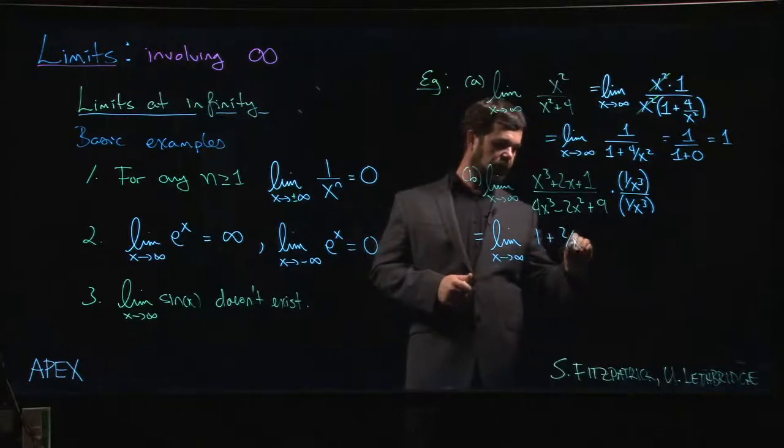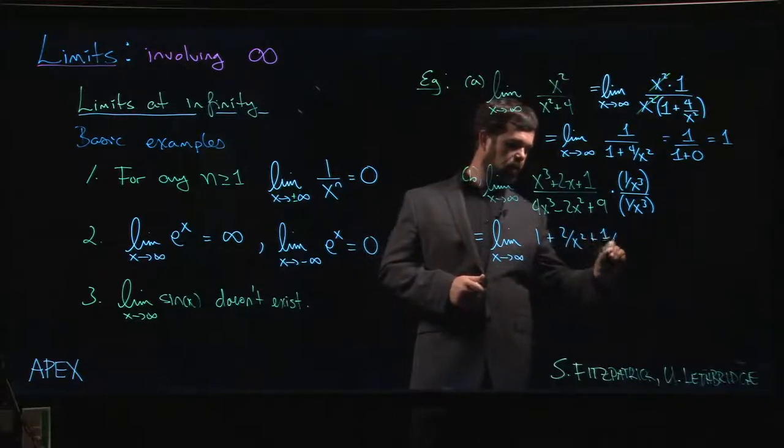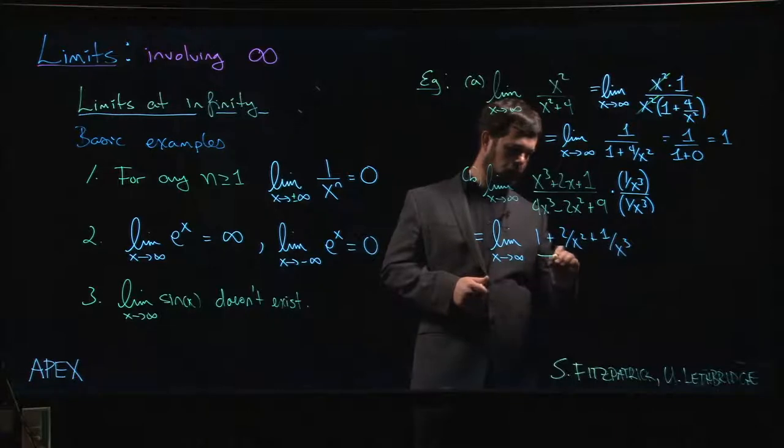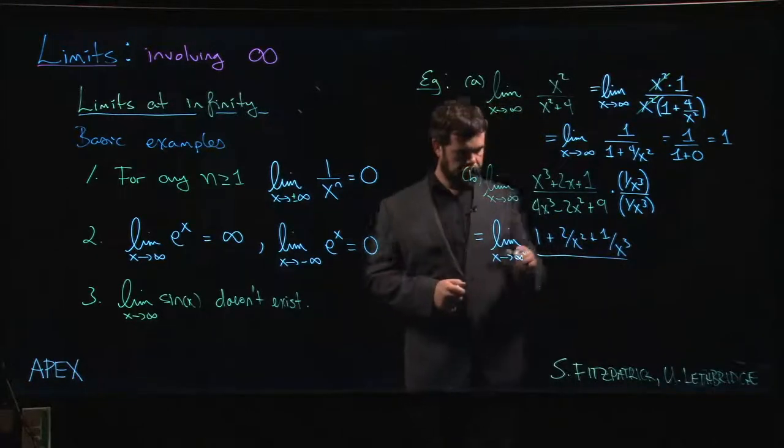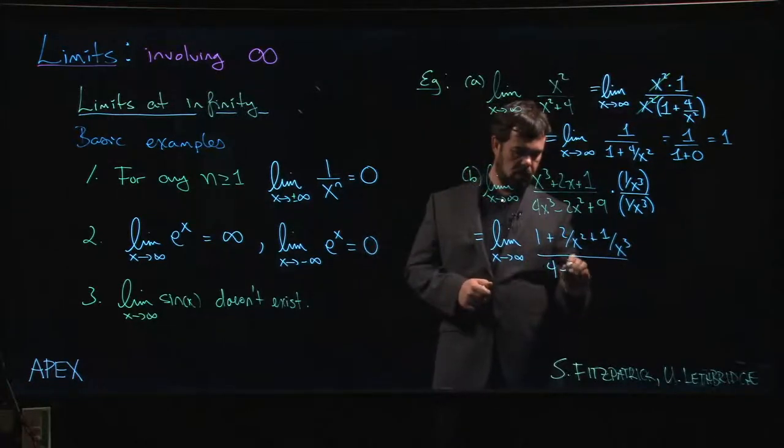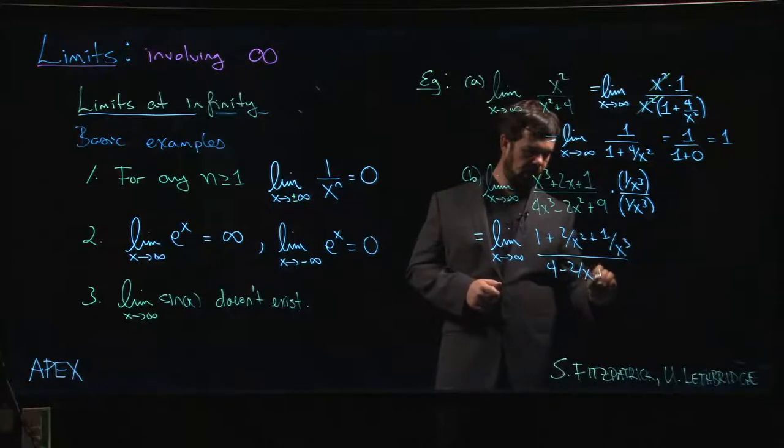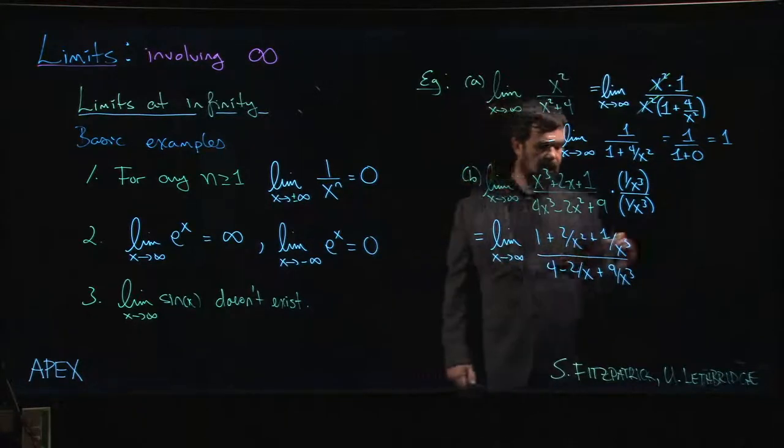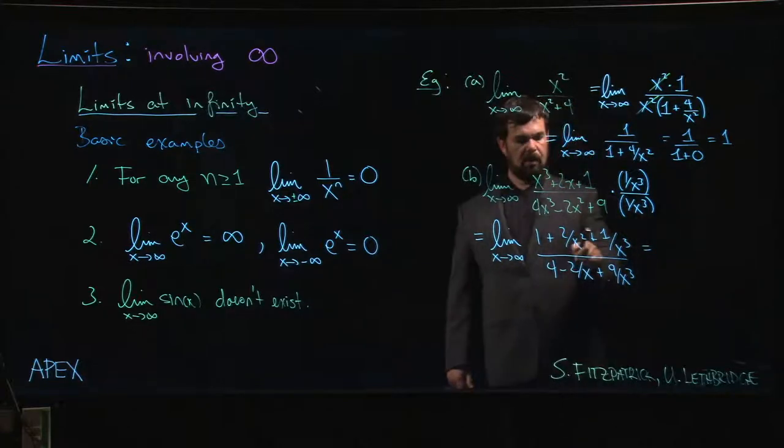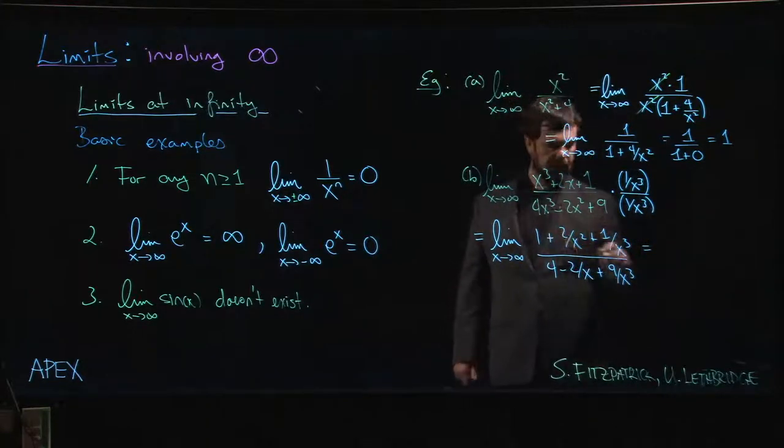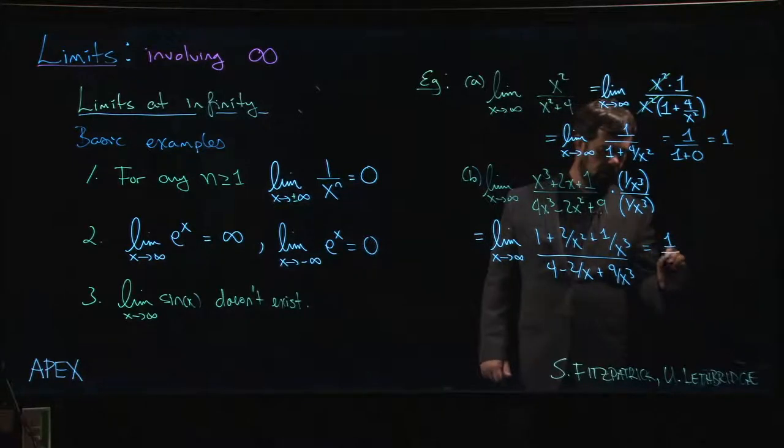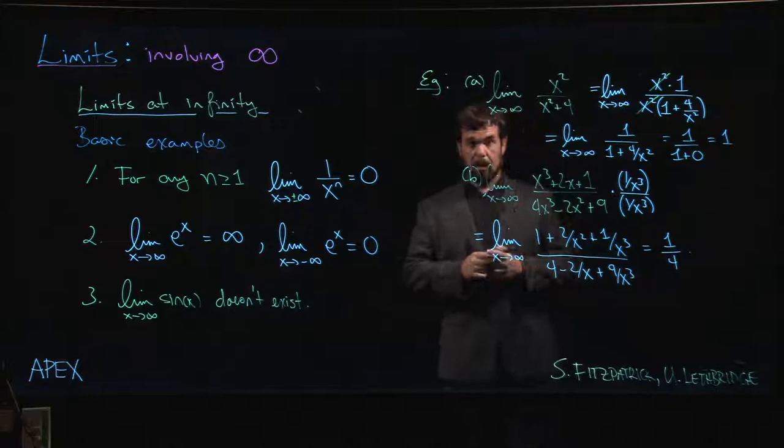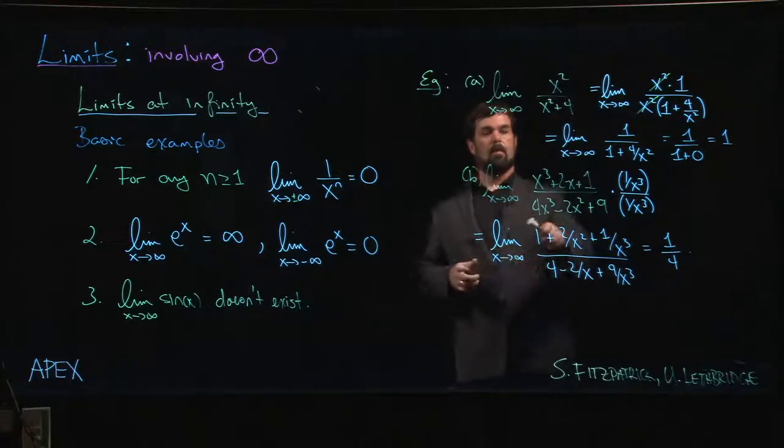Plus two over x squared plus one over x cubed, divided by four minus two over x plus nine over x cubed. And again now we can apply some limit laws. Those terms are all going to go to zero, which simply leaves me with one over four.